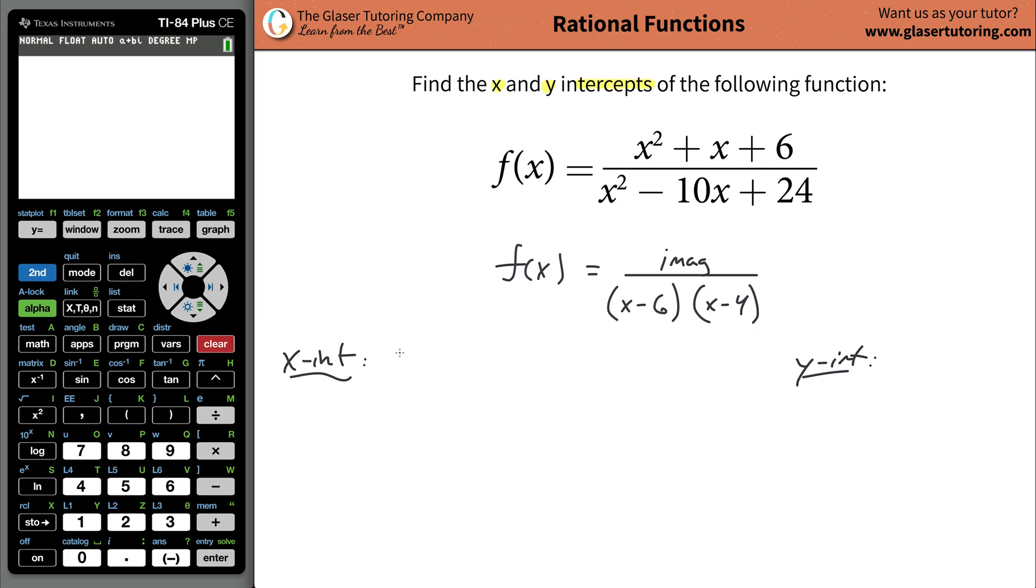To do the x intercept, you're going to take f of x, set it equal to zero, and solve for x. So we're going to plug in zero for f of x. Let's write x squared plus x plus six divided by, I'll leave this in fully factored form, x minus six times x minus four.